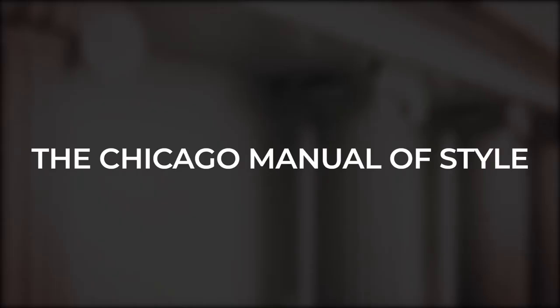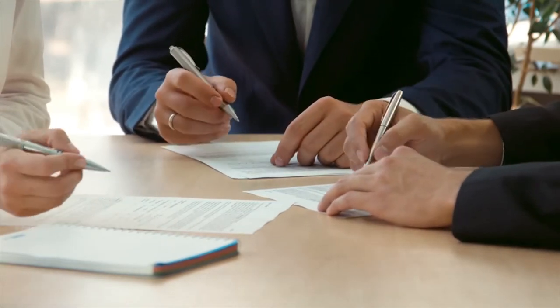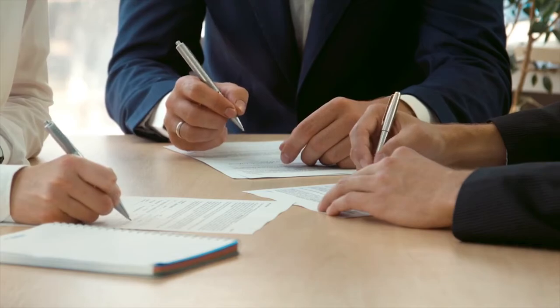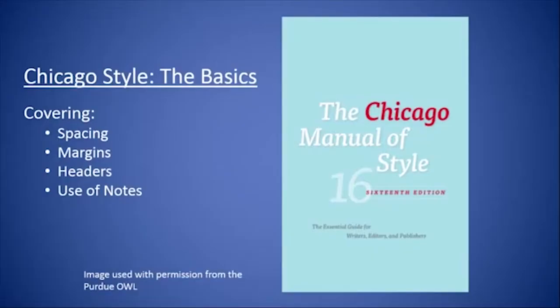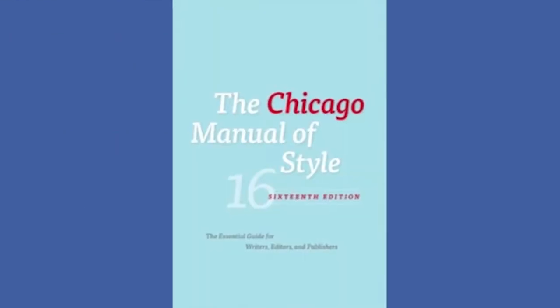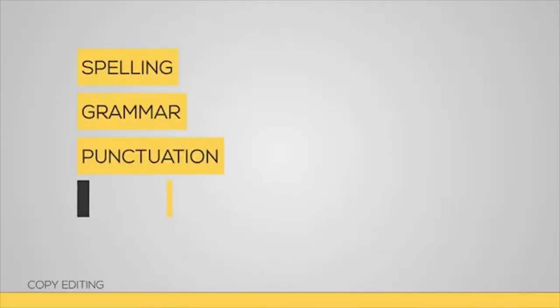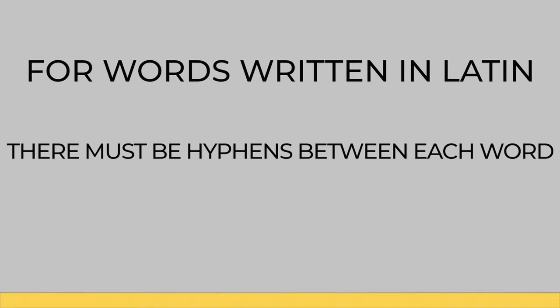The Chicago Manual of Style. Actual communication and writing have different contexts, and there are specific rules that govern how to write words in an accepted format. These rules are spelled out in the Chicago Manual of Style. For the use of Latin, there is only one accepted format. The CMOS General Manual guides everything about language use, from grammar to context, punctuation, and citation. The manual states that for words to be written in proper Latin, there must be hyphens between each word — so the statement comes out in a hyphenated format.